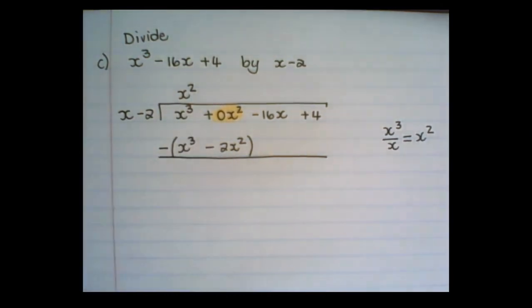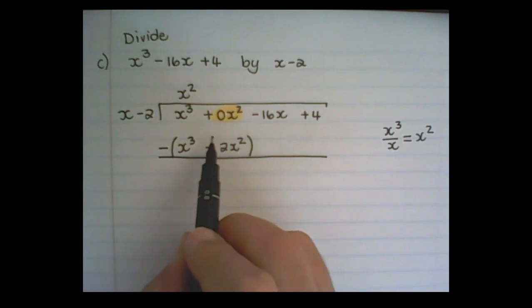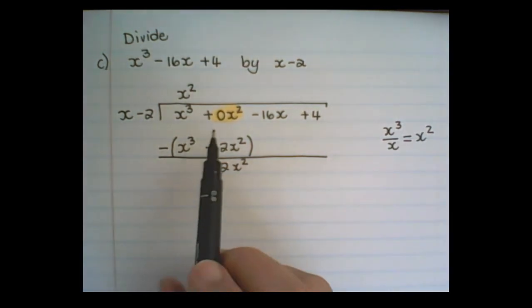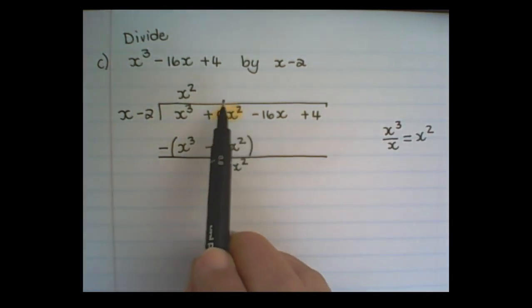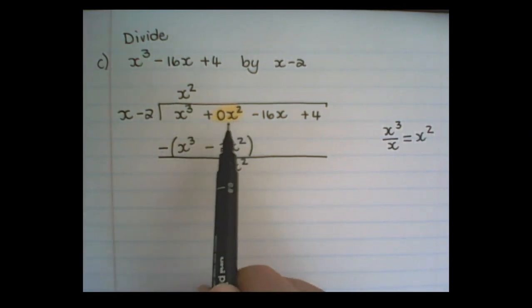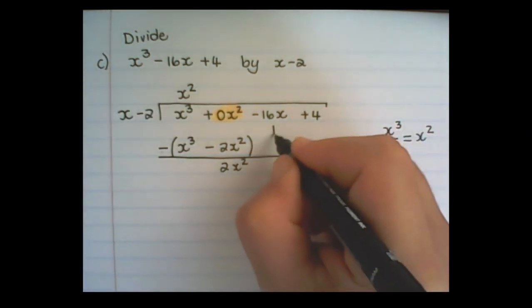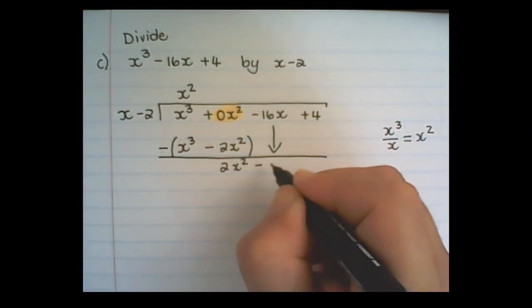So the x cubed will cancel each other out. And this will become negative negative, so it is plus 2x squared. And that is why we needed to add this x squared, to have the proper spacing and a placeholder for the 2x squared which is produced. Then I bring the negative 16x down.